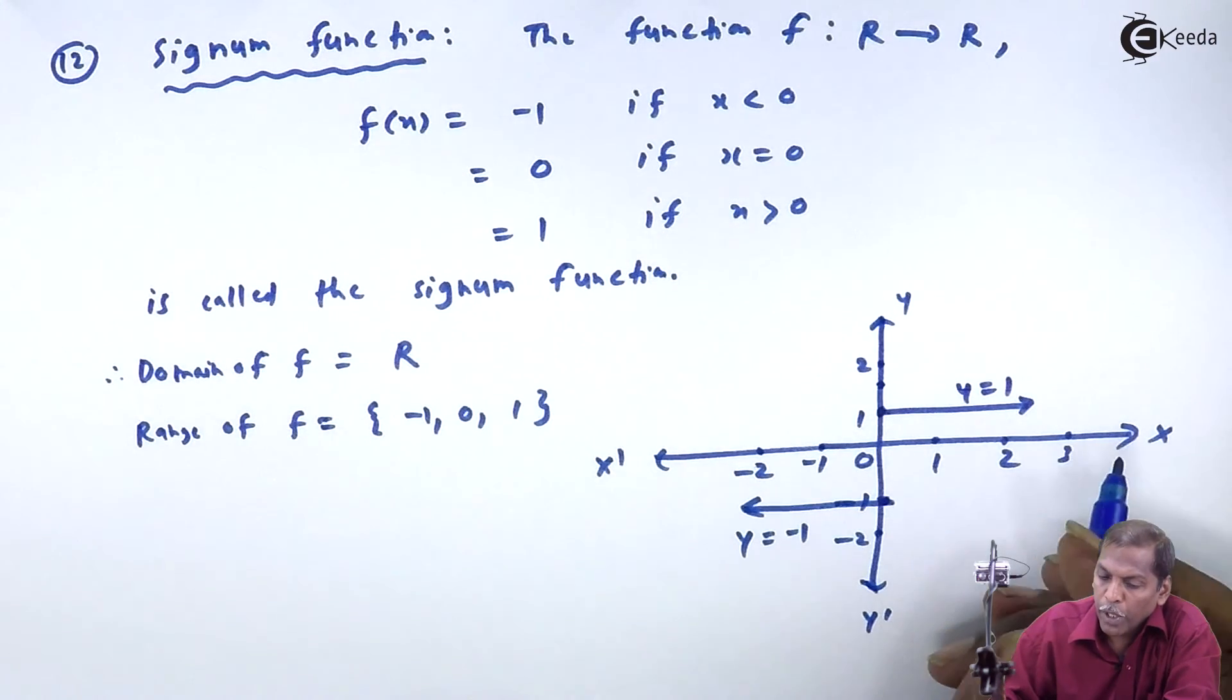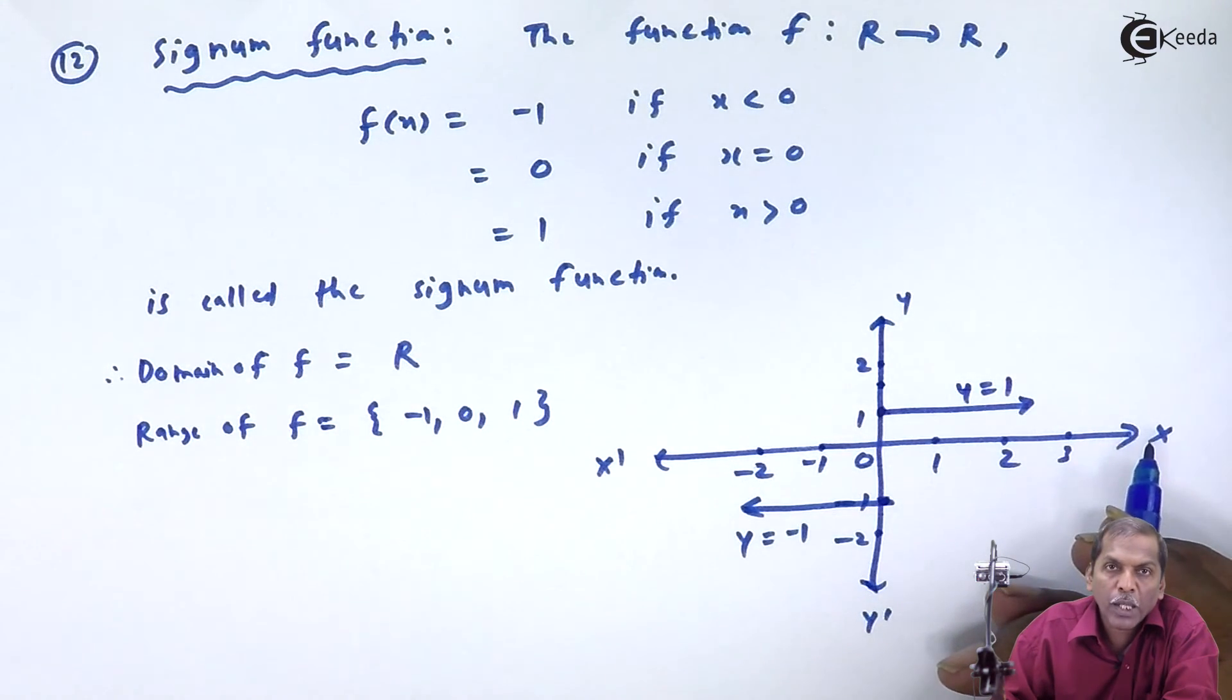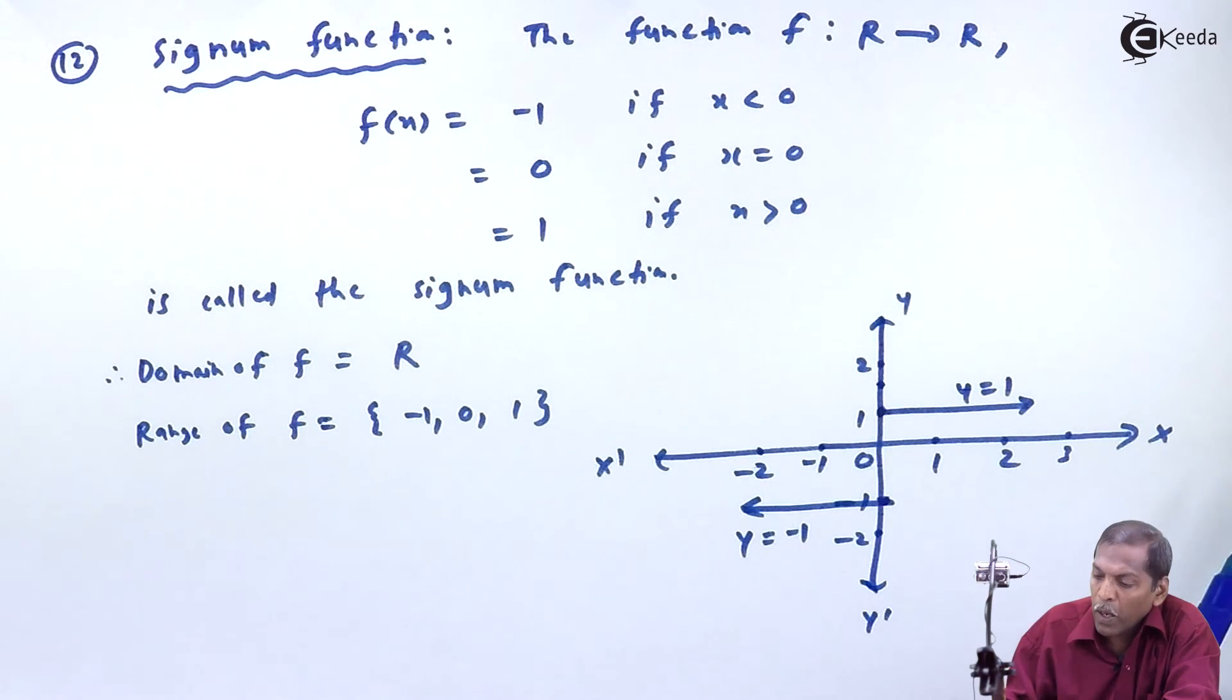So it means the graph of the signum function is always parallel to the x-axis. The domain is always the set of real numbers, and the range of the signum function is always fixed: -1, 0, 1. See you in the next step!